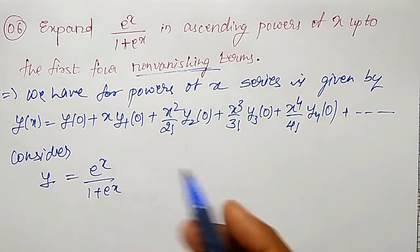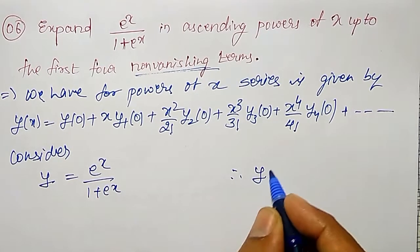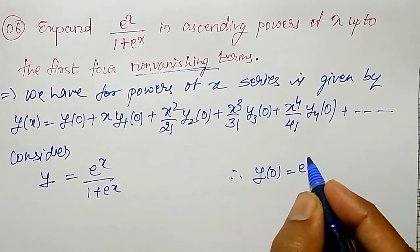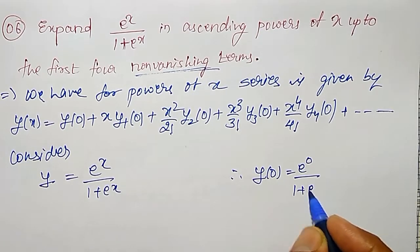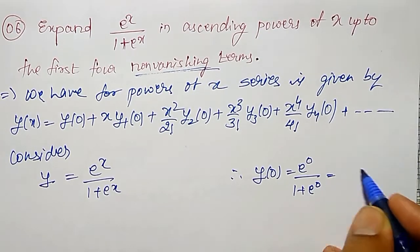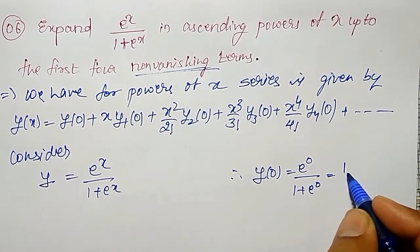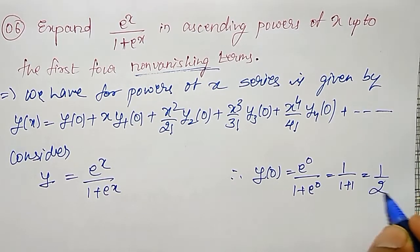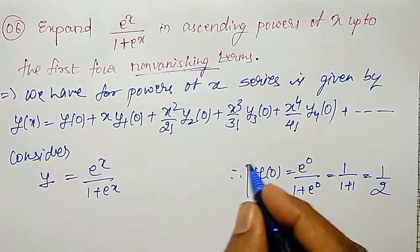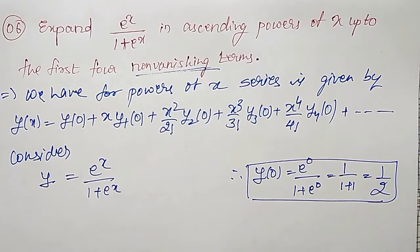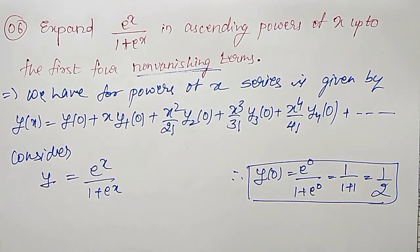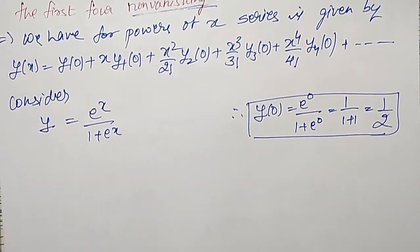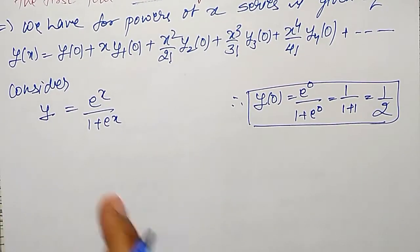First I want y at x equal to 0. So y(0) = e⁰ divided by 1 plus e⁰, which is 1 divided by 1 plus 1, that is 1 by 2. So y(0) = 1/2. Then I have to find y₁, the first derivative.